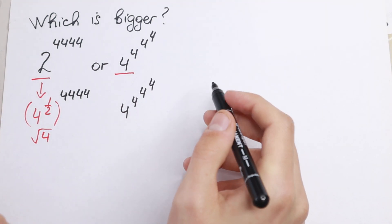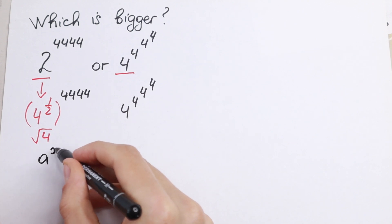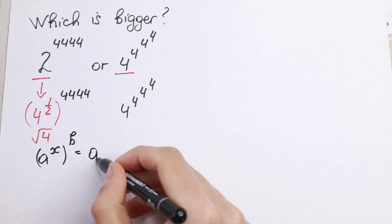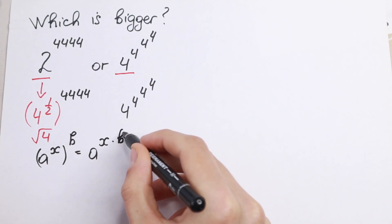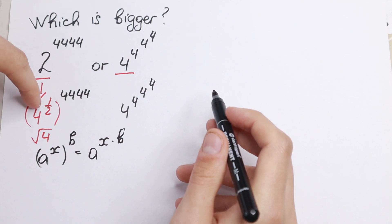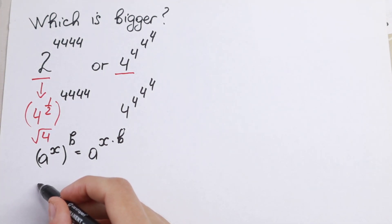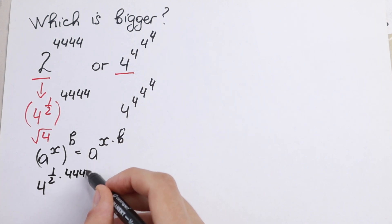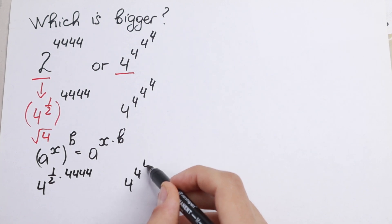We all know the rule in this situation. We have a situation like a to the power x, raised to the power b, and we can write it as a to the power x times b. So we just multiply these powers. Let's do this in our case: 4 to the power 1/2, times 4,444.